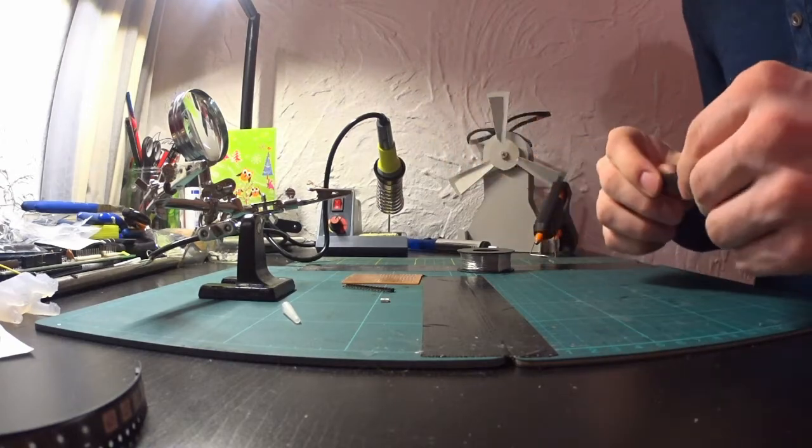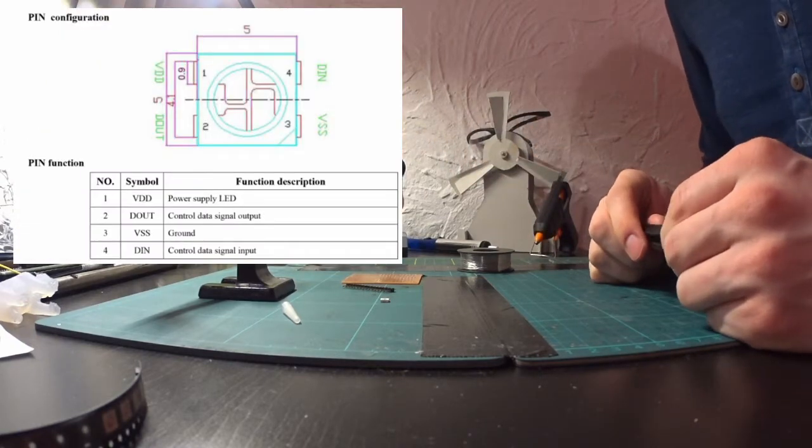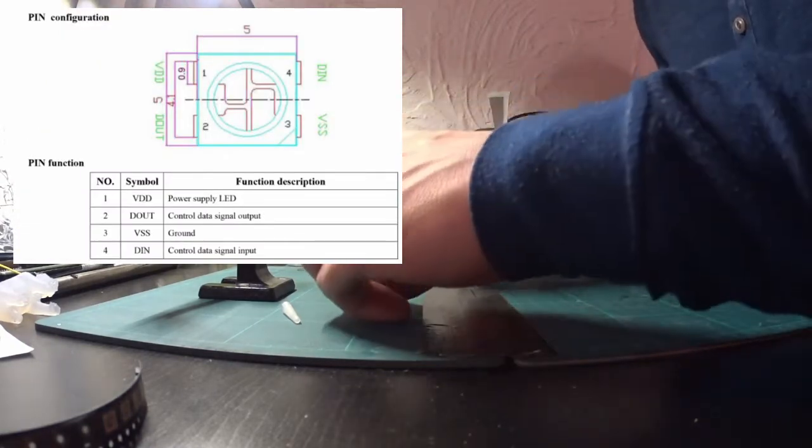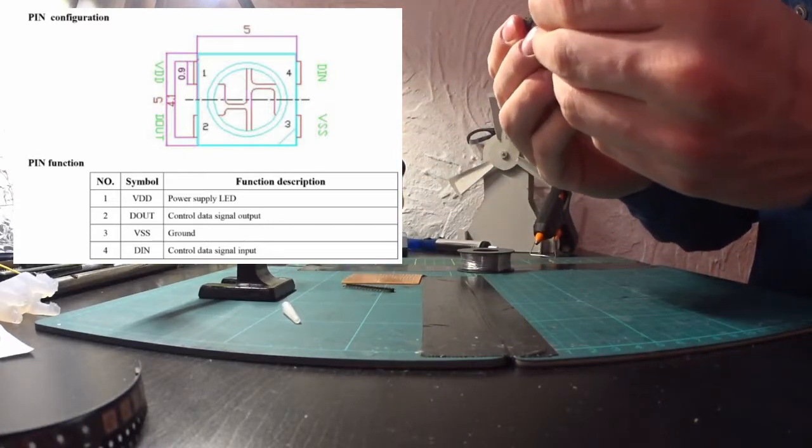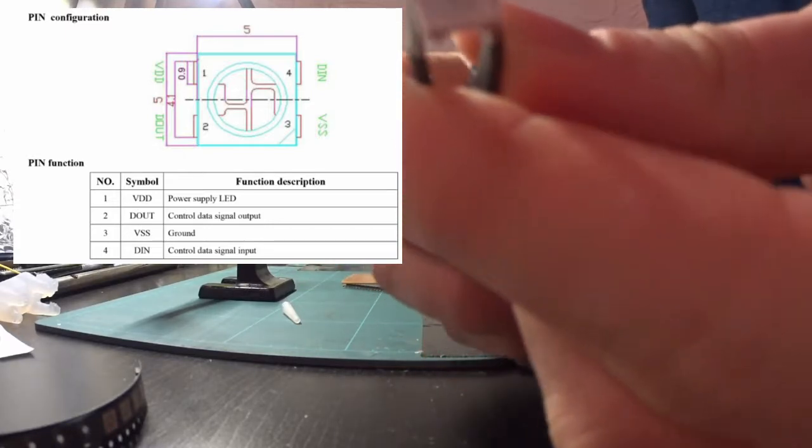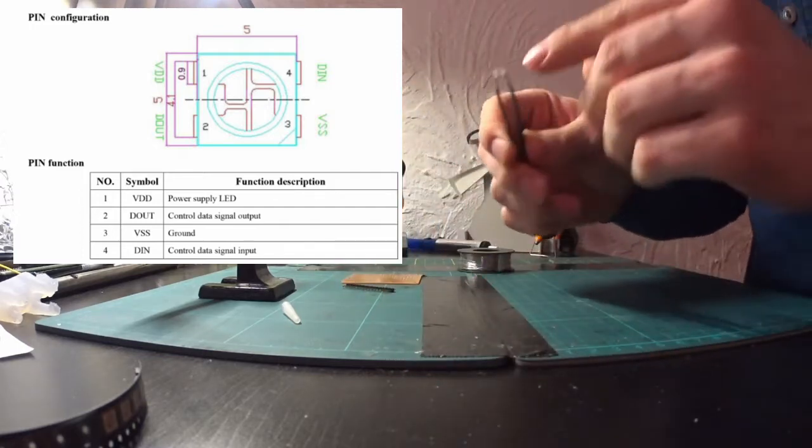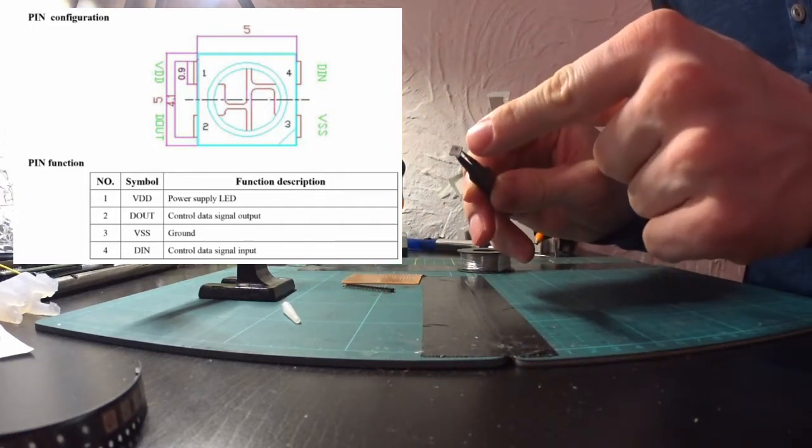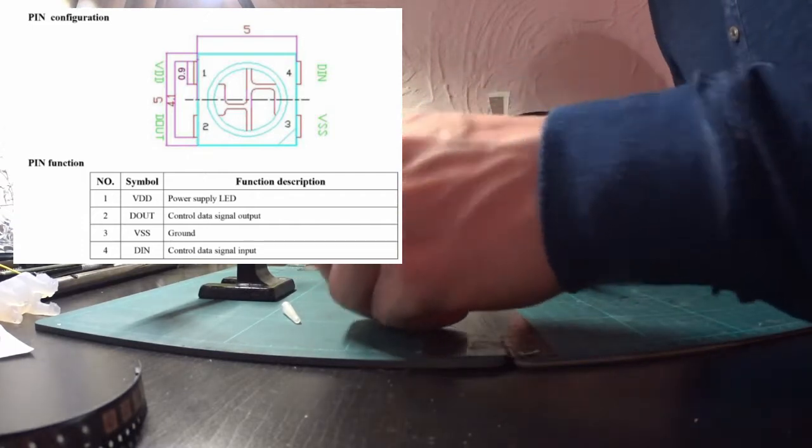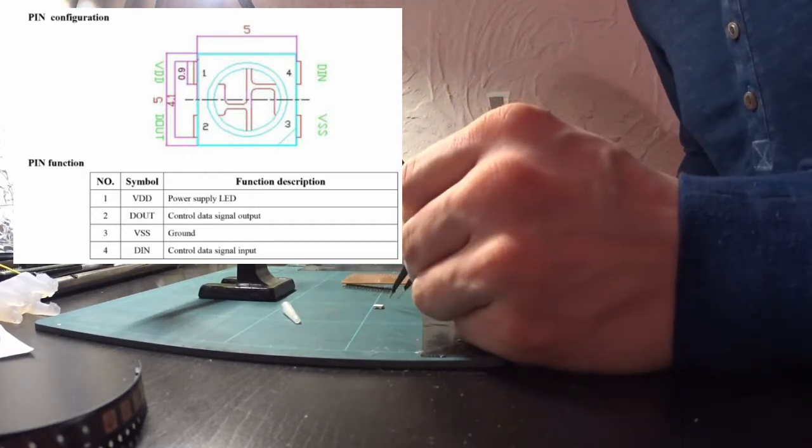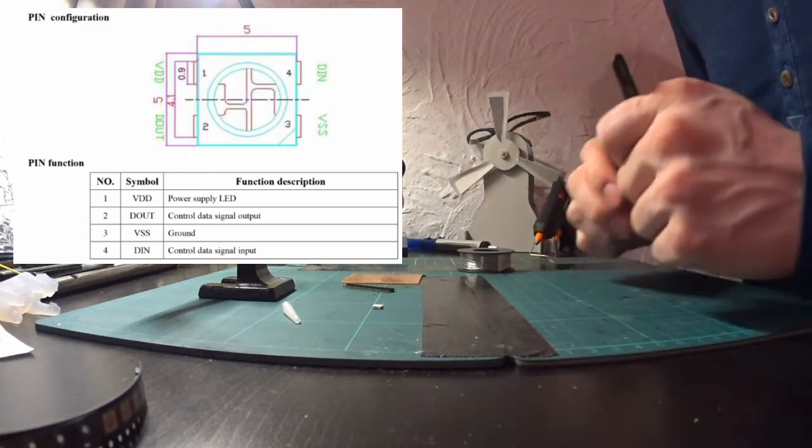And I will blend in the schematic now. As you also can see, there is a little triangle on the chip itself. It's very hard to see on the camera, but over here there is also this triangle which you can find in the schematic. It's very useful to orient yourself with this triangle.